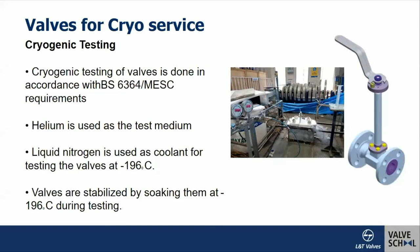Cryogenic valves require an extension stem because when the temperature goes below minus 50°C, the stem packing and other soft components need to be protected, as they may become brittle at such low temperatures.